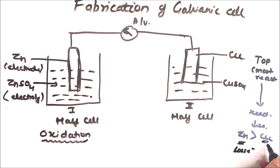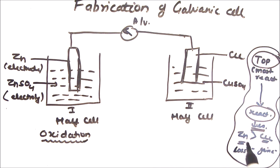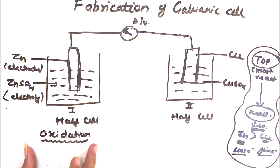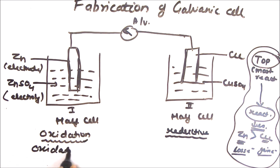Because zinc is more reactive, it has a tendency to lose electrons, and because copper is less reactive, it has a tendency to gain electrons. Metals at the top of the reactivity series are more reactive, and those at the bottom are less reactive. Since zinc is more reactive, it will lose electrons and undergo oxidation, whereas copper is less reactive so it will gain electrons and undergo reduction. Therefore, the first half cell is known as the oxidative half cell, and the second is known as the reductive half cell.